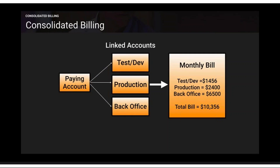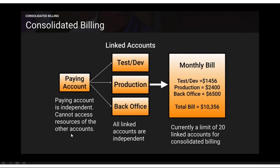The major advantage of consolidated billing is all accounts come into one place. For example, with one paying account and three linked accounts — test and development, production, and back office — with monthly bills of $1,456, $2,400, and $6,500 respectively, the total of $10,356 appears in the paying account. You can also view individual account bills separately, and payment is made from one place.